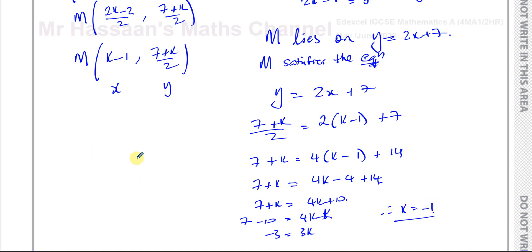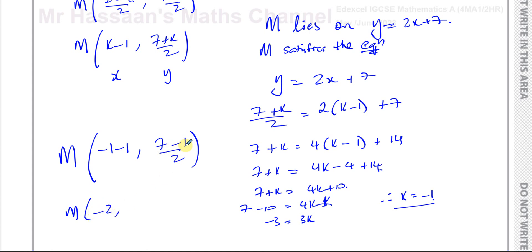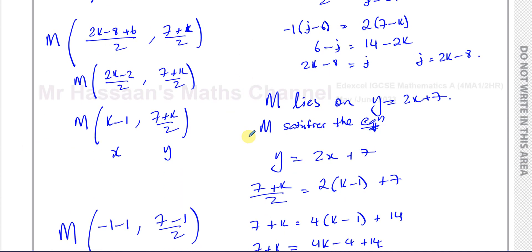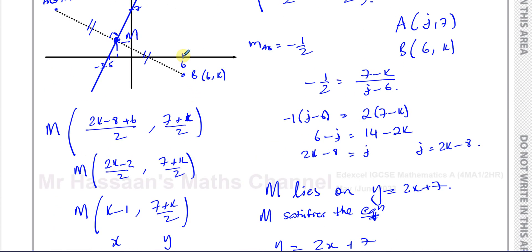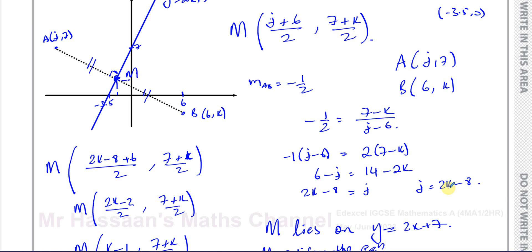So if K equals negative 1, I can work out the answer. The midpoint's x-coordinate is K minus 1, which is negative 1 minus 1 equals negative 2. The y-coordinate is 7 plus K over 2, which is 7 minus 1 over 2 equals 6 over 2 equals 3. So the midpoint is negative 2, 3. That looks right in terms of the way we sketched it. We can verify: K equals negative 1, so B is (6, -1), and J equals 2K minus 8 equals minus 10, so A is (-10, 7).